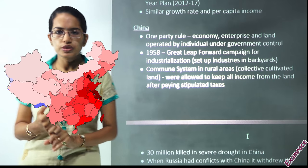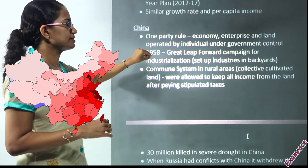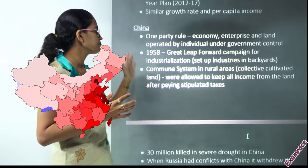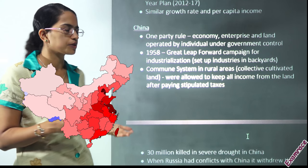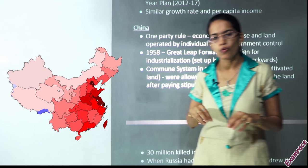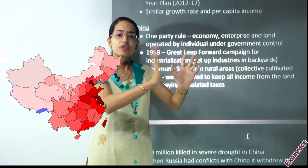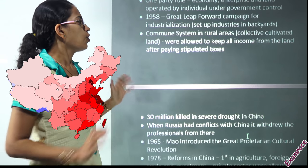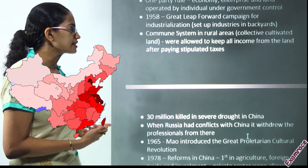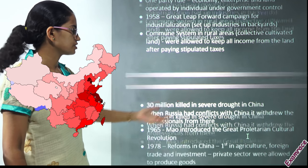In China, one-party rule was established, under which the economy, enterprise, and land ownership by individuals were placed under government control. Under Maoist rule, and later from 1958 with the Great Leap Forward movement, industrialization was promoted. Numerous small industries were established at home — in people's backyards. Small industries were more flourishing compared to large ones in China during that time. In rural areas, the commune system involved collectively cultivated land, and everyone could keep income from the land after paying taxes.